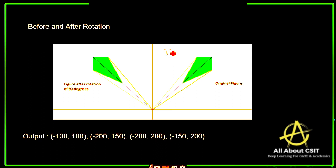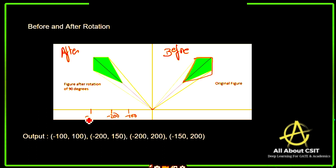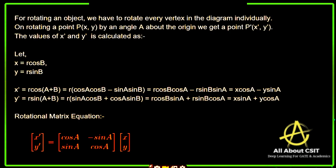Before and after: this is before rotation and this is after rotation. This is the original figure. After applying the coordinates the output is like minus 100, minus 200, minus 150, and so on. The object rotates and after rotating 90 degrees, the object will appear like this — it's just rotating the object, not a mirror image. For rotating an object, we have to rotate every vertex in the diagram individually.